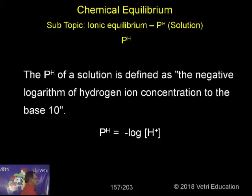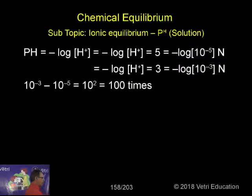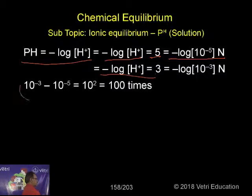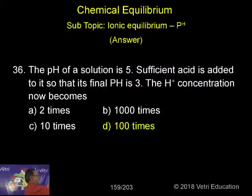Let me explain now. pH of a solution is defined as the negative logarithm of hydrogen ion concentration to the base 10. This is the formula. Now substituting: minus log [H⁺] equals 5, that is minus log of 10 to the power of minus 5. The second one is minus log of 10 to the power of minus 3. The difference between these two gives 10 to the power of 2, that means 100 times is the correct answer.